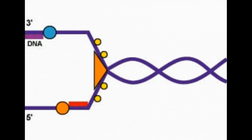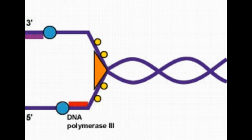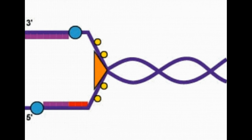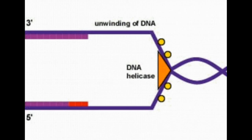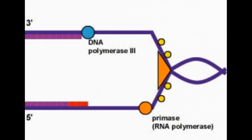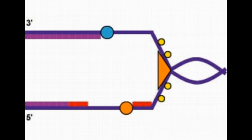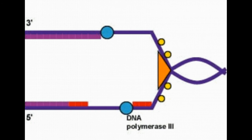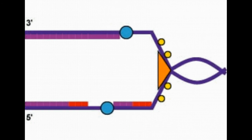On the top, DNA is being synthesized continuously. Polymerase attaches to the three-prime end and begins to build a new strand of DNA. On the bottom, a special start is being produced by an enzyme called RNA primase.